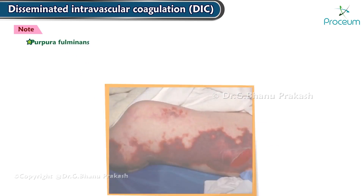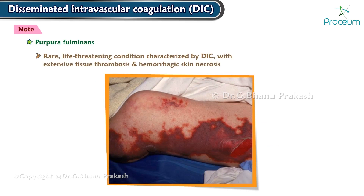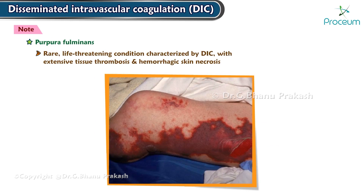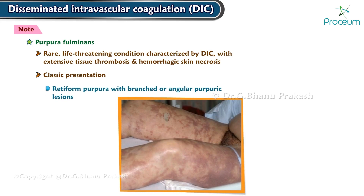Purpura fulminans. This is a rare, life-threatening condition characterized by DIC with extensive tissue thrombosis and hemorrhagic skin necrosis. The classic presentation includes retiform purpura with branched or angular purpuric lesions.